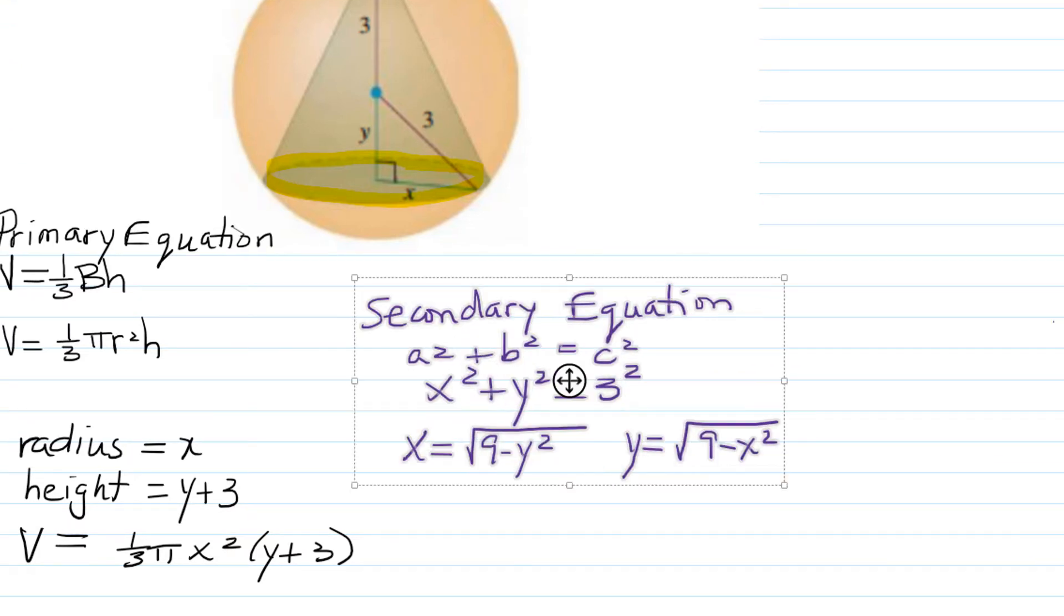In this case, the relationship between x and y is given by the Pythagorean theorem. The secondary equation is a²+b²=c². That enables us to relate x to y, giving us x²+y²=3². We can either solve for x and write it in terms of y, as I've done on the left, or solve for y and write it in terms of x.